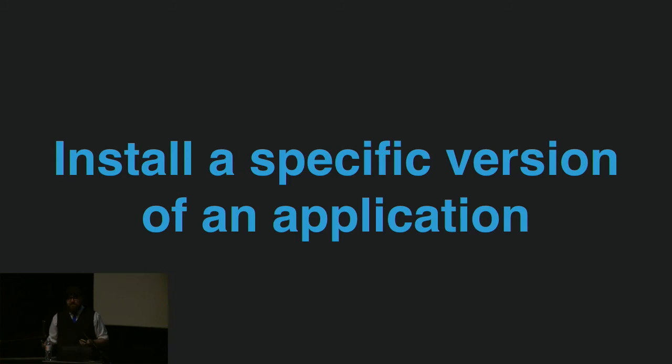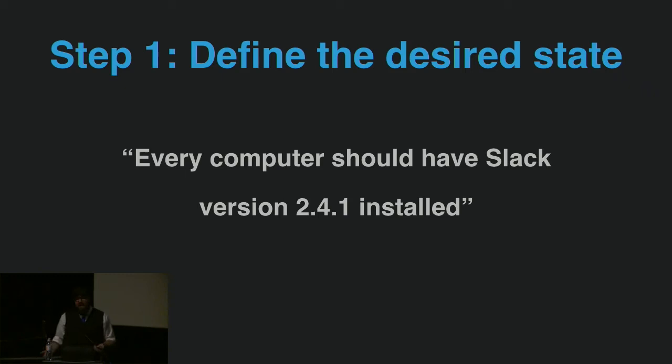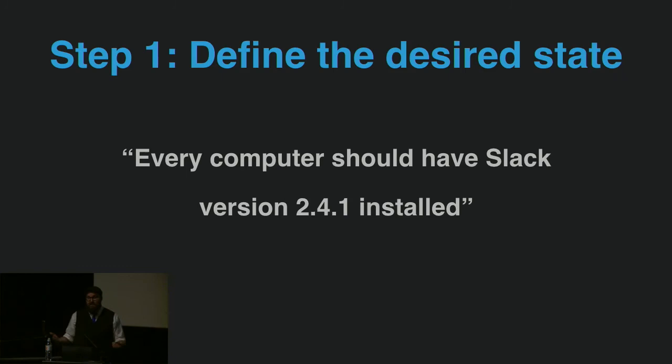The first thing I want to talk about is installing a specific application. When you're dealing with desired state management you have a few things you have to do. First step: define what your desired state actually is. In our example we're going to use Slack — specifically version 2.4.1, which is the latest version as of a few days ago — and we want every computer in our fleet to have Slack version 2.4.1 installed.